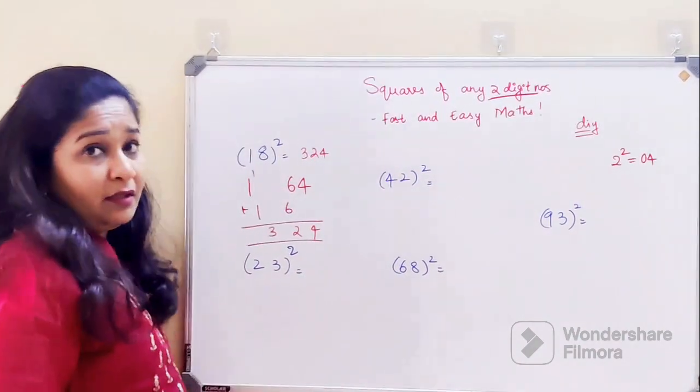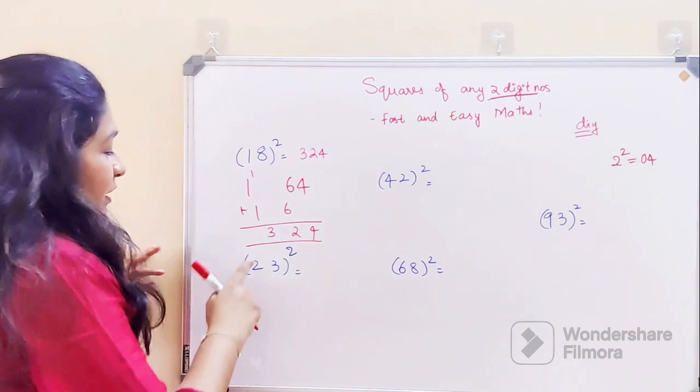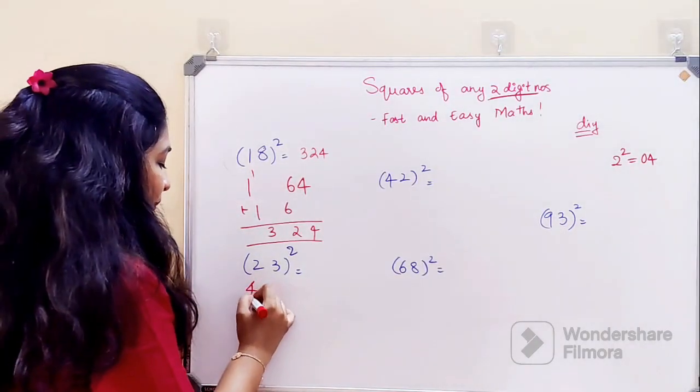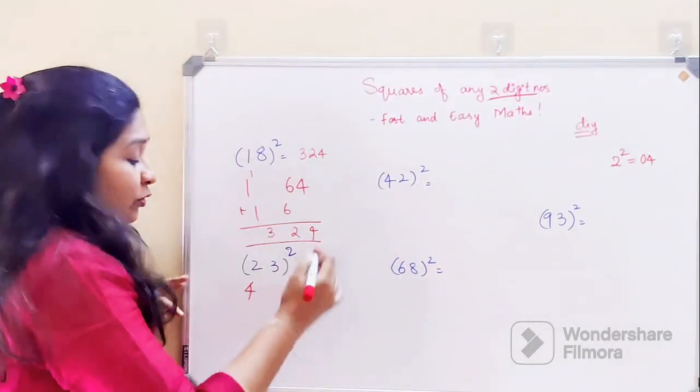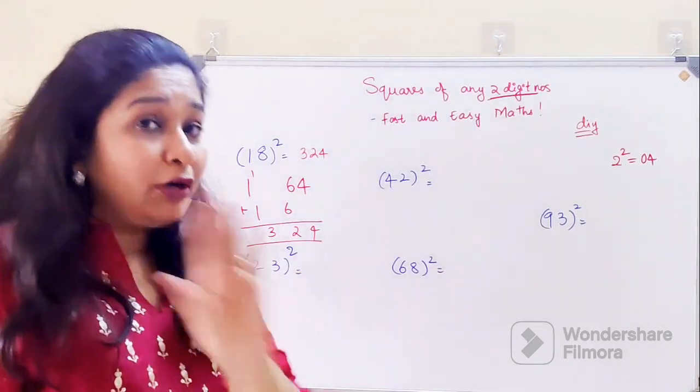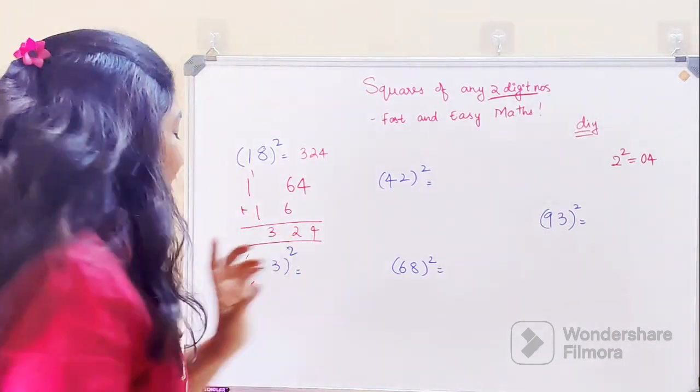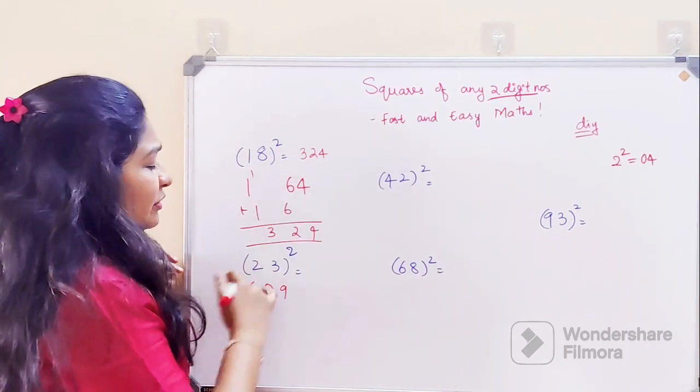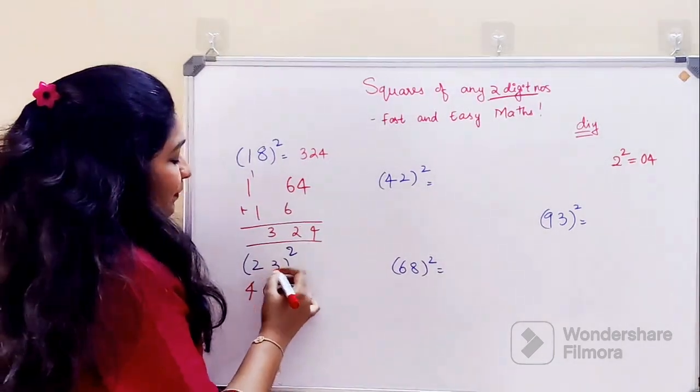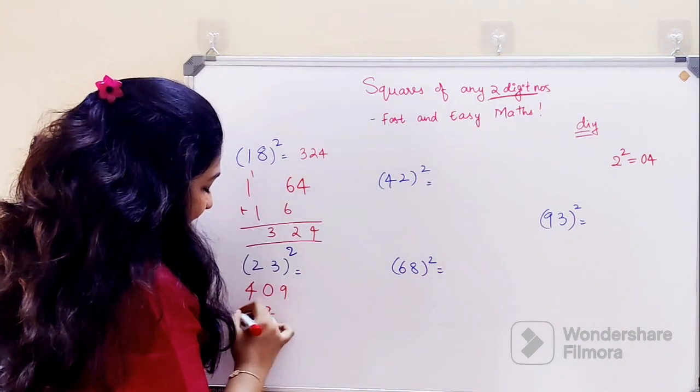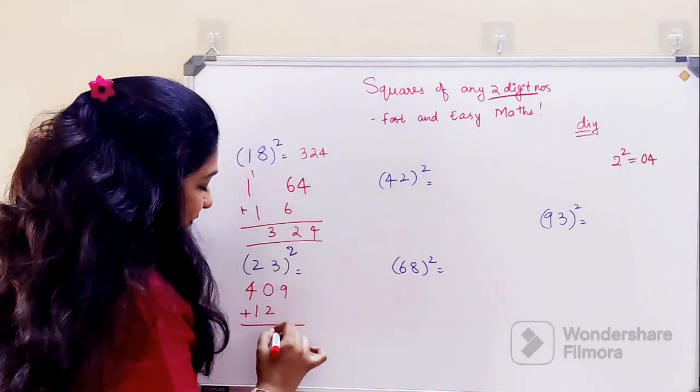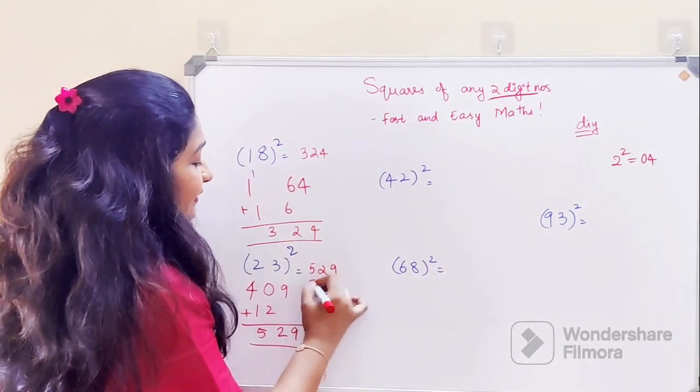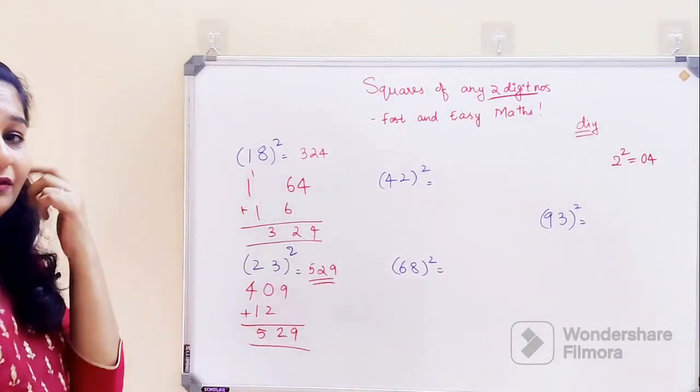Now coming to this one: the first digit we'll write as it is, which is 4. Square of 3 gets you 9, but since I told you we cannot write it in single-digit form, we'll write it in two-digit form, which is 09. Then just multiply them: 2 times 3 is 6, 6 times 2 is 12. Add them and your answer is 529. That is the answer for square of 23.